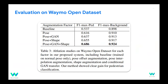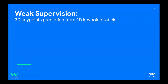We evaluated this on a pedestrian classification task — a simple binary classifier for pedestrians versus background objects. The takeaway is that the more diverse the generated poses, the better the performance. The best result combines the parametric model with perturbations of both shape and pose.